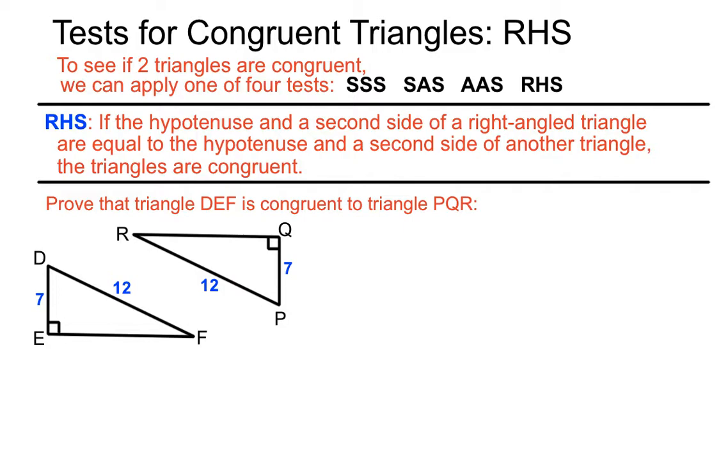And let's have a look and see if we've got enough information to state that. RHS: R stands for right angle, H stands for hypotenuse, and S stands for a side.